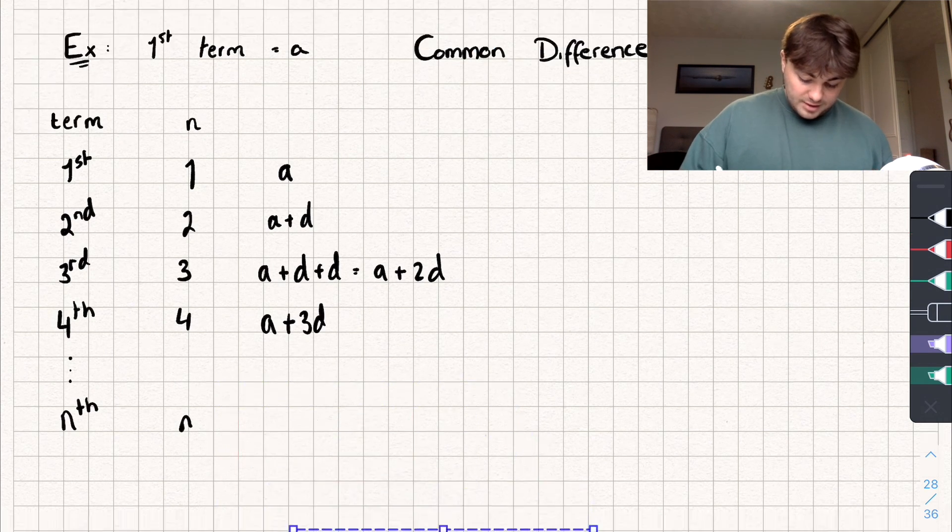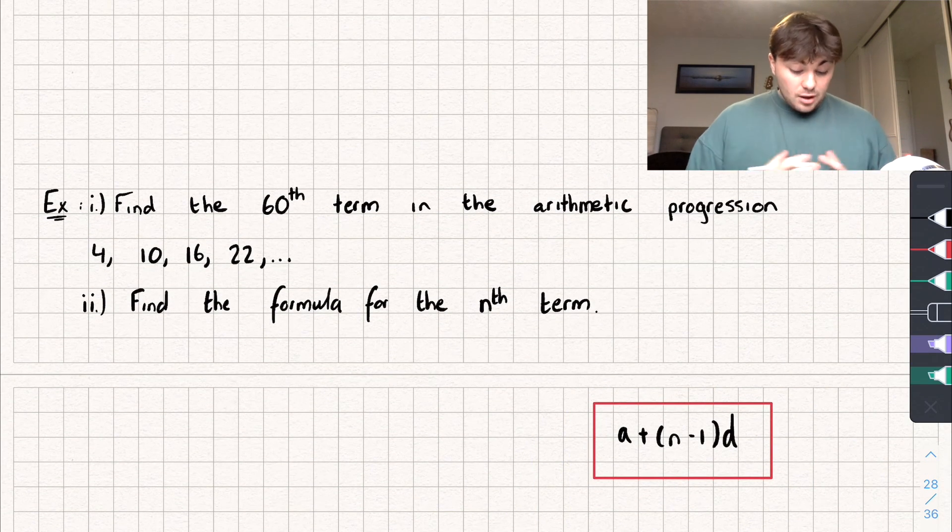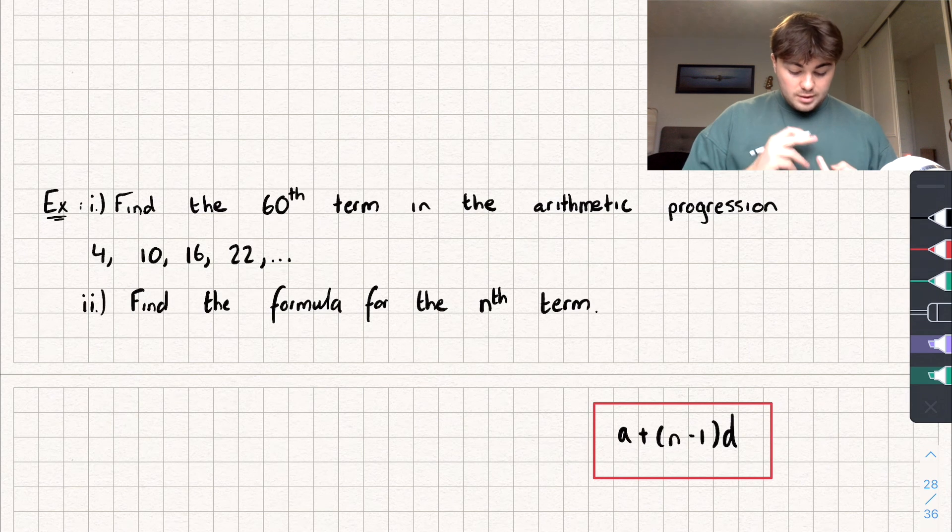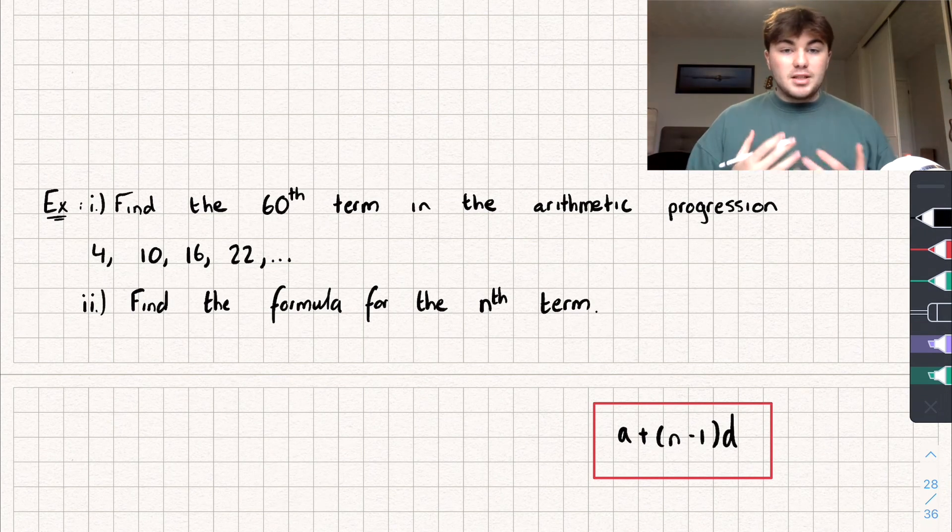And so what I will do is bring this down and we can have a look at a question. So we're given an arithmetic progression. Okay, 4, 10, 16, and 22. And it says find the 60th term in this arithmetic progression.